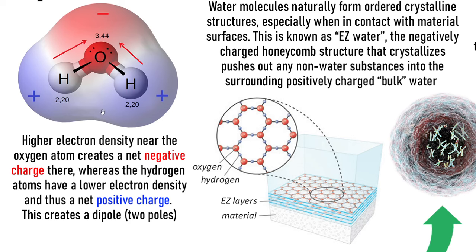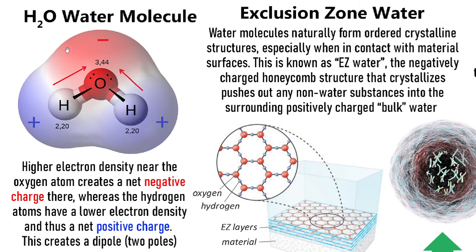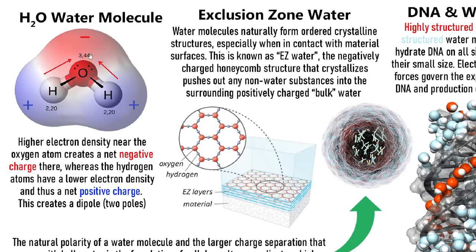These electrons are kind of floating through these clouds probabilistically, but they're more often around the oxygen, so it creates this dipole and it becomes a polar molecule. Water has this net charge differentiation, making each water molecule a little magnet effectively — it's a polar molecule, basically a little magnet.